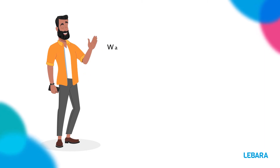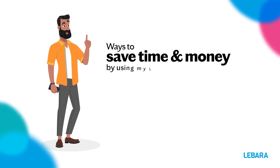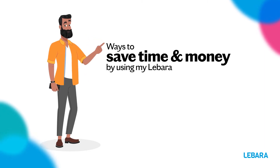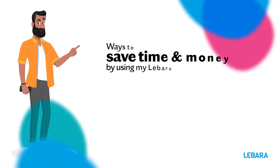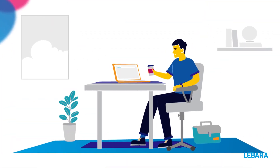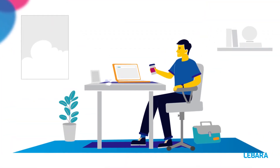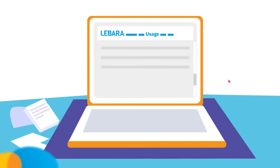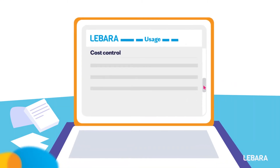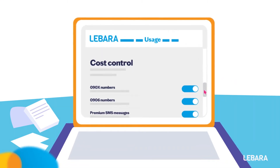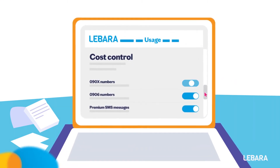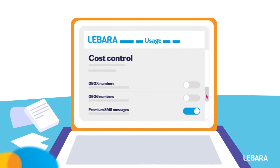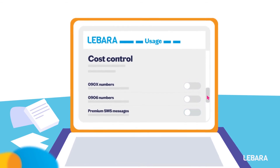Hi, I'm Leon. Here are some ways you can save time and money by using MyLabara. You can go to settings and then cost control and can deactivate certain fee-based service numbers and premium SMS messages.